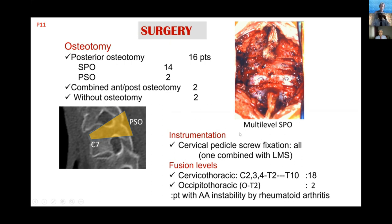Regarding instrumentation, I used surgical fixation for all patients. Fusion level was C2 or C3–C4 down to T2 or T10. Two patients required occipitocervical fixation because they had atlantoaxial instability due to rheumatoid arthritis.